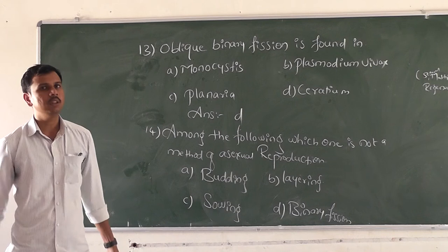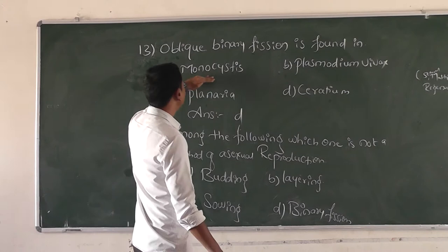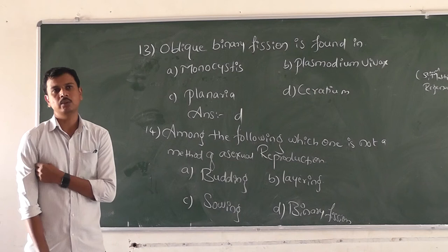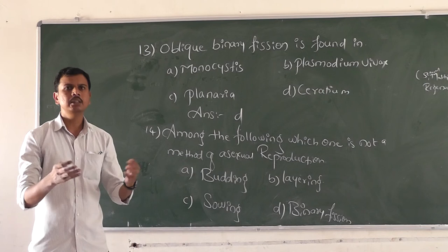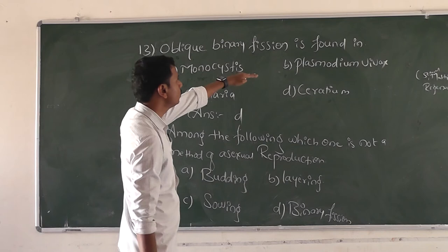Regarding the remaining three options: monocystis reproduces through sexual reproduction — that is, fusion of gametes takes place and they give birth to another individual.